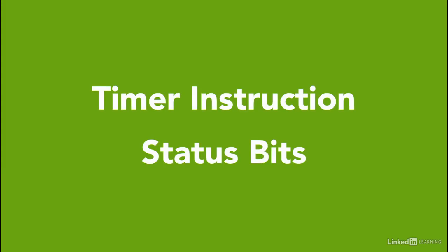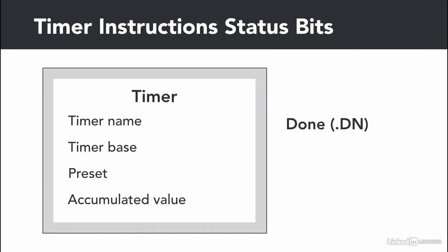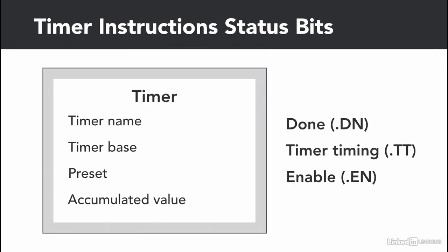A timer instruction comes with three main status bits: the timer done bit, timer timing bit, and timer enabled bit. Depending on the PLC type, the bits are either attached to the timer instruction or hidden.